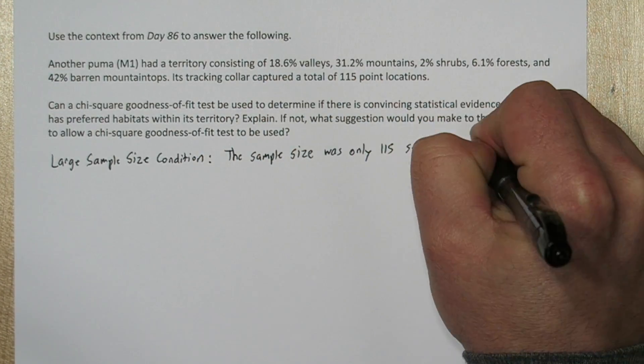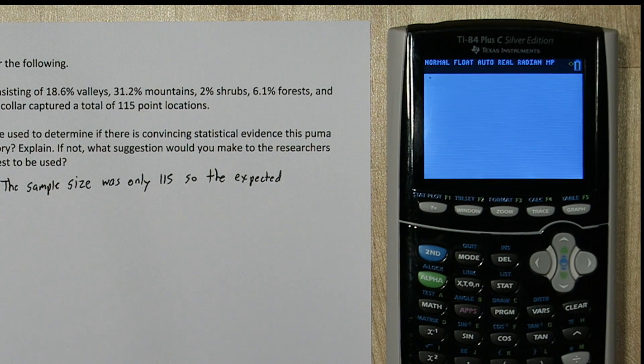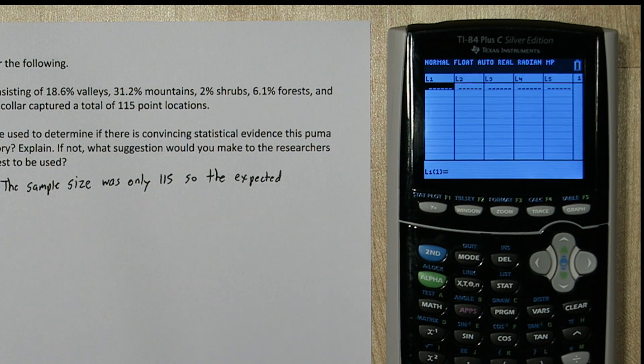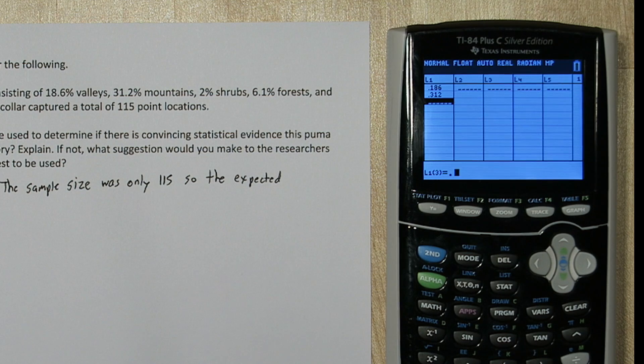The sample size was only 115, so we need to calculate the expected cell counts. If we press STAT and ENTER, here's our list, and we're going to type in all the percentages of each type of habitat for this mountain lion's territory.